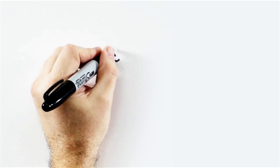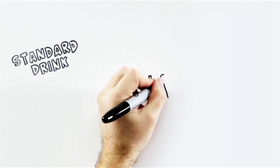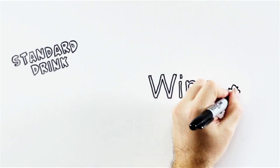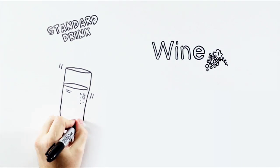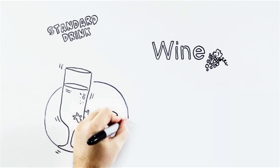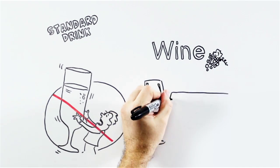When we talk about a standard-sized glass of wine, we don't mean that large glass that can fit an entire bottle. What we do mean is 5 ounces or 142 milliliters of wine, which is a standard drink.